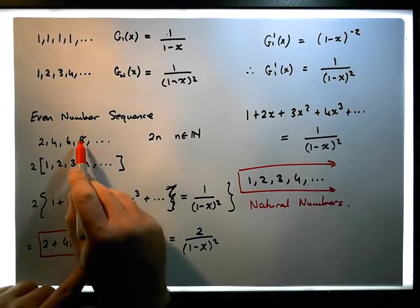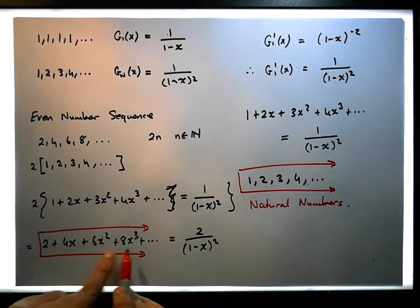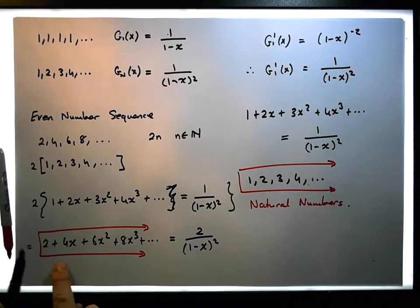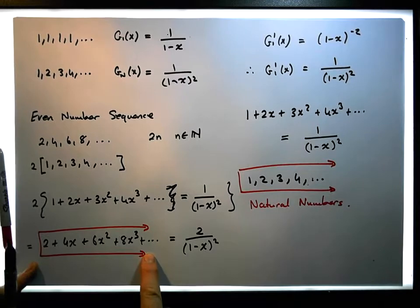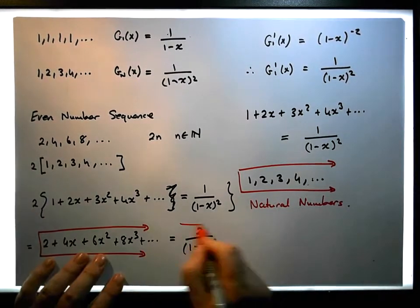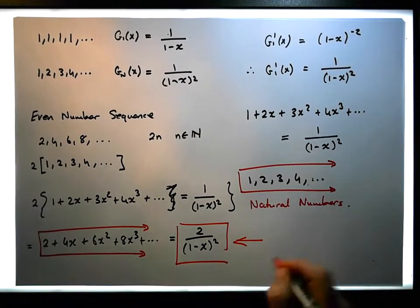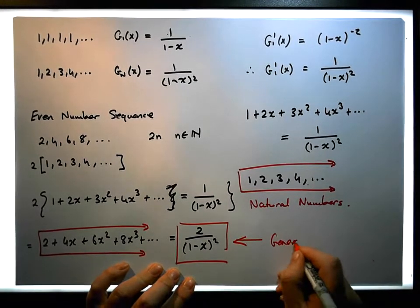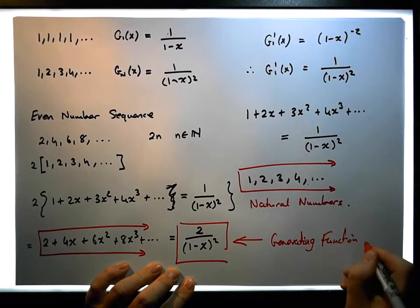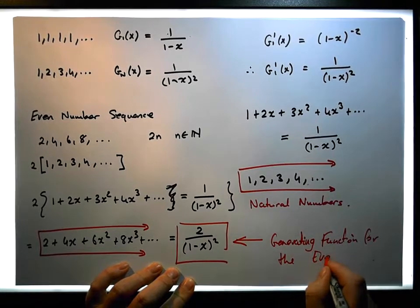We can see that each term in the sequence of even numbers is associated with one of the power terms in this power series. We also know that this particular summation of this power series is equal to this particular value here. So what this now represents is the generating function for the even numbers.